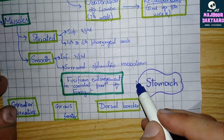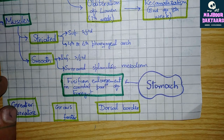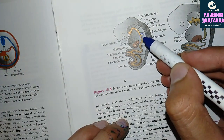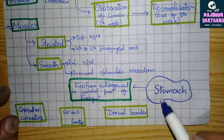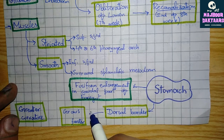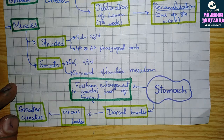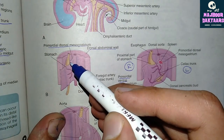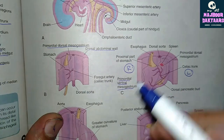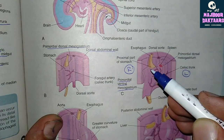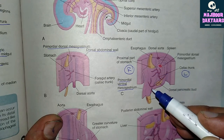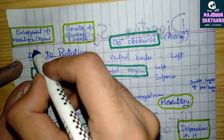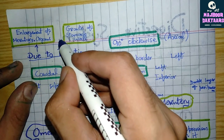The stomach starts as a fusiform enlargement in the caudal part of the foregut. At its dorsal border, the stomach grows faster than the ventral one, giving rise to the greater curvature of the stomach. Rotation occurs in the stomach during embryonic development, mainly due to the enlargement of mesenteric organs and the growth of the stomach wall.